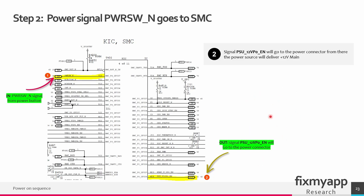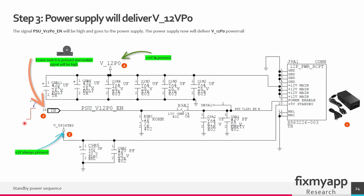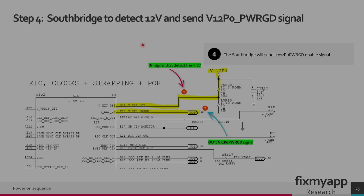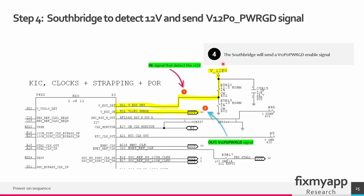The enable signal PSU 12 volt power on enable goes to the power supply, and the power supply will output the 12 volt power on rail. This enable line comes from the Southbridge IC, goes to the power supply, and because this signal is high it will generate the 12 volt main power rail — outputted as 12 volt power on. The Southbridge then detects that the 12 volt created by the power supply is present on a detect pin, and if everything is okay it outputs an enable signal called the 12 volt power on power good signal.